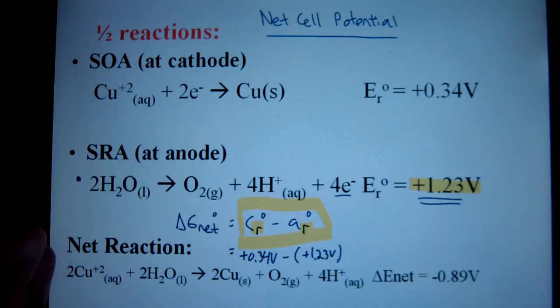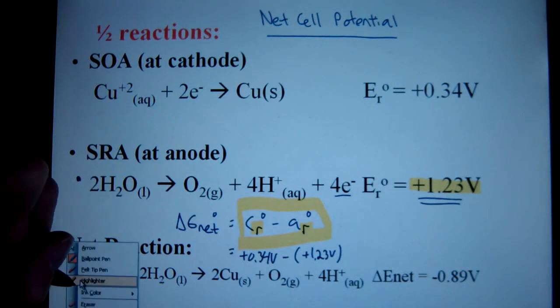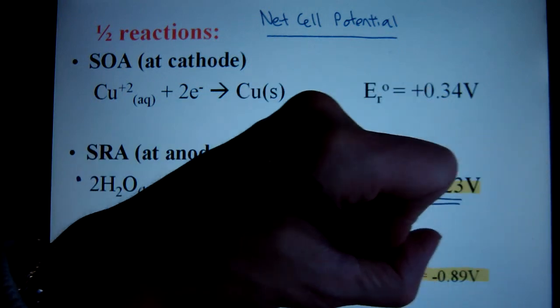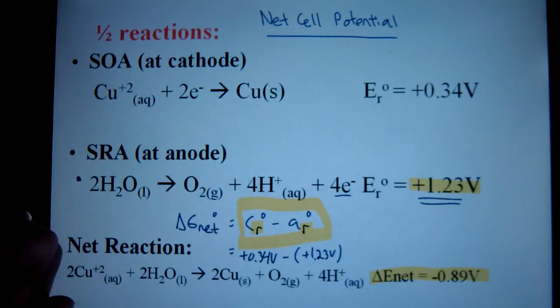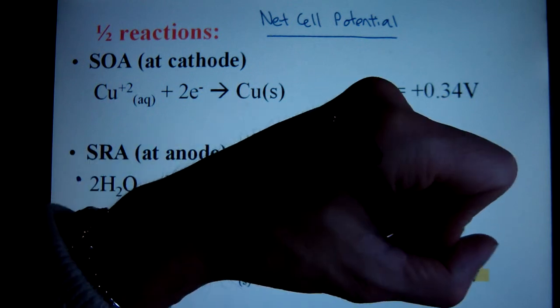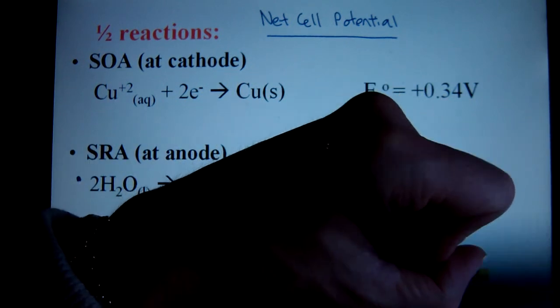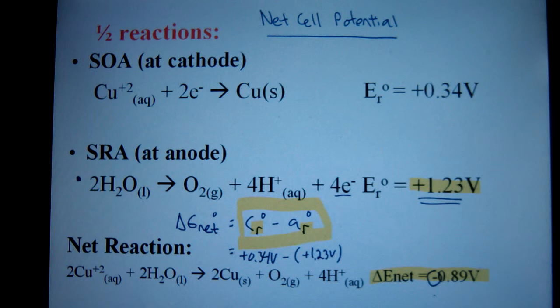Subtract them, and I get my final answer of negative 0.89 volts. Since this is an electrolytic cell, that's why the net cell potential is negative. Therefore, that's how much energy you have to put in.